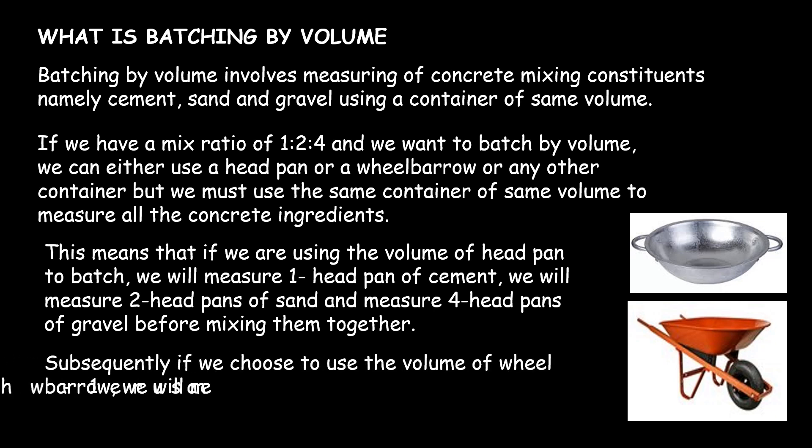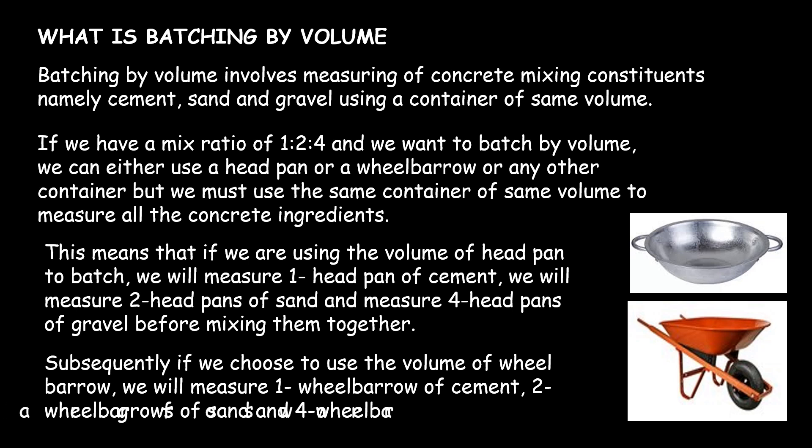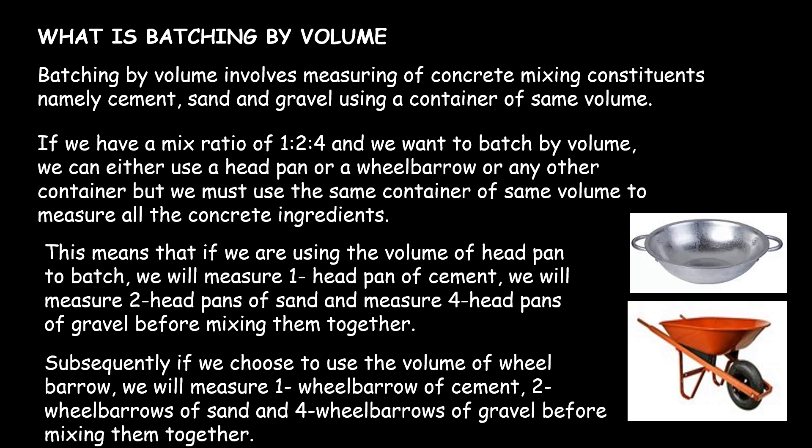This means that if we are using the volume of a headpan to batch, we will measure two parts of sand and also measure four parts of gravel before mixing them together. Subsequently, if we choose to use the volume of a wheelbarrow to batch, we will measure one wheelbarrow of cement, two wheelbarrows of sand, and four wheelbarrows of gravel before mixing them together. This will give us our mix ratio of 1:2:4.